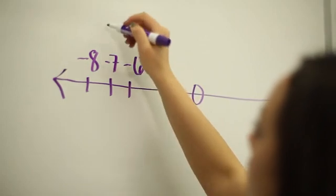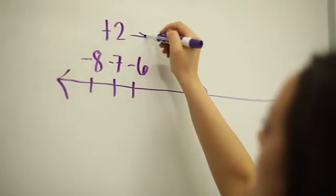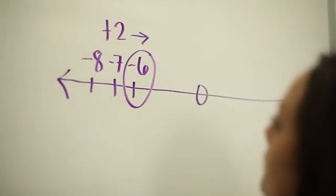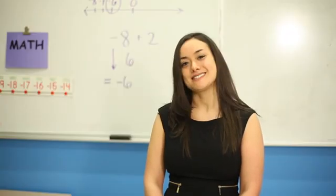Look at negative 8. We're adding 2, which means we're moving to the right because we're adding a positive value, giving us negative 6.